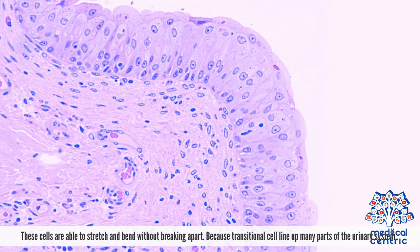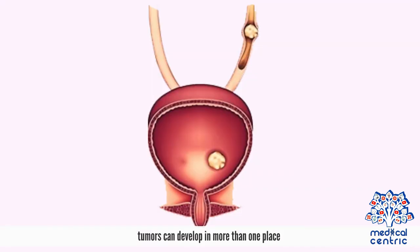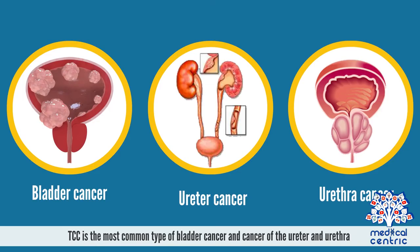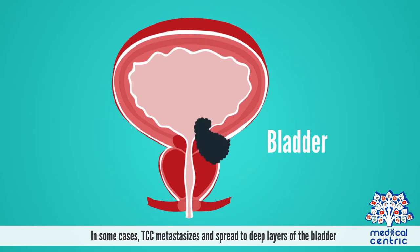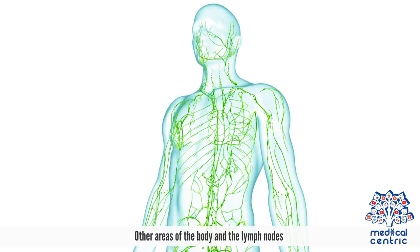Because transitional cells line many parts of the urinary system, tumors can develop in more than one place. TCC is the most common type of bladder cancer and cancer of the ureter and urethra, and is the second most common type of kidney cancer. In some cases, TCC metastasizes and spreads to deep layers of the bladder, other areas of the body, and the lymph nodes.